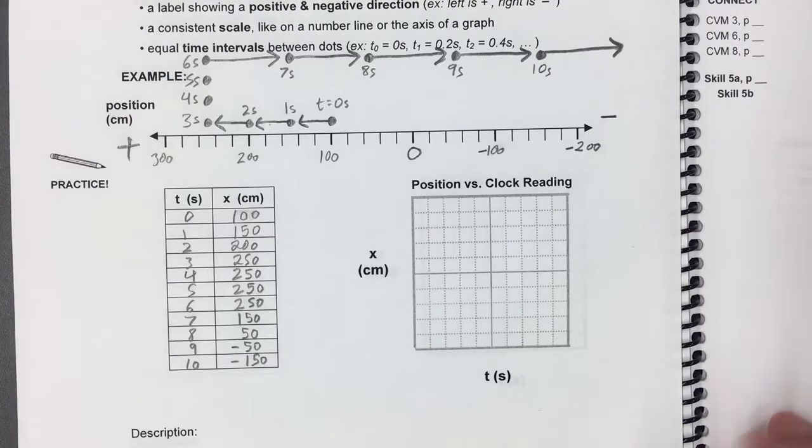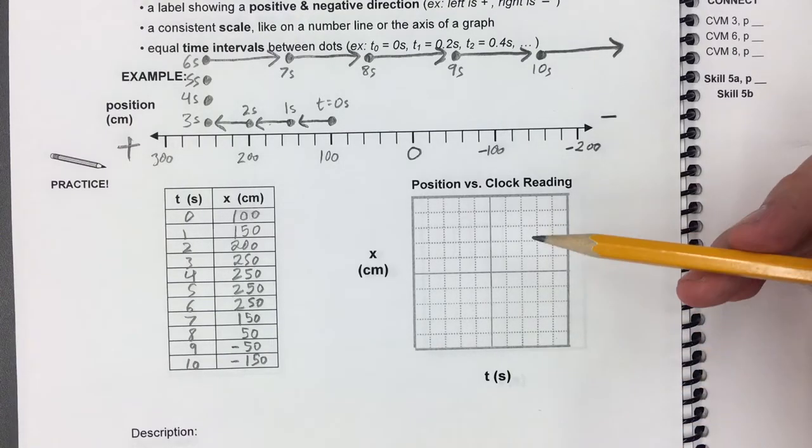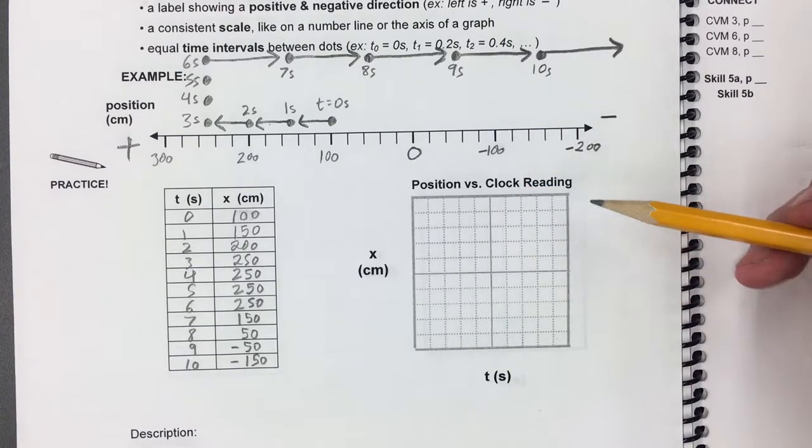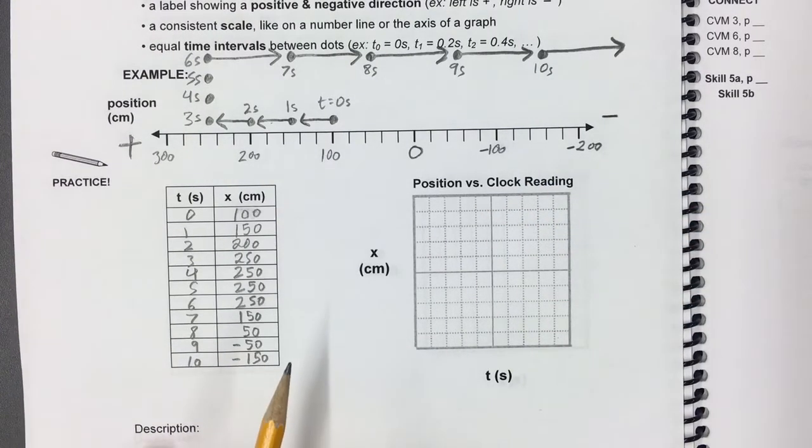So now that we've got this motion map, our last step is to make the position versus time graph, the position versus clock reading graph, and to describe this motion.